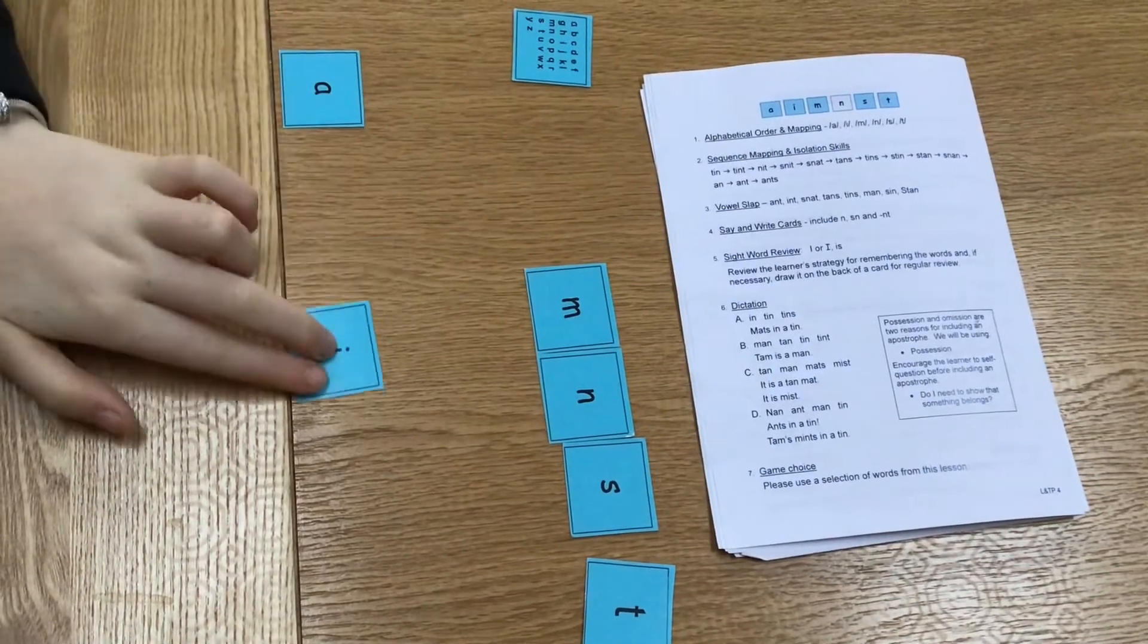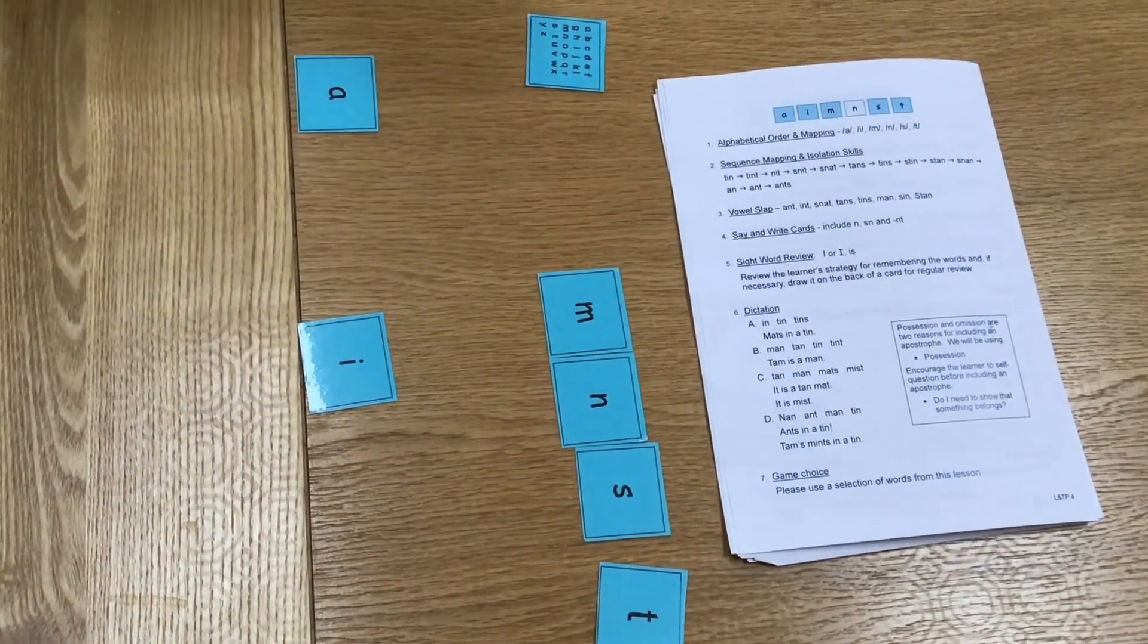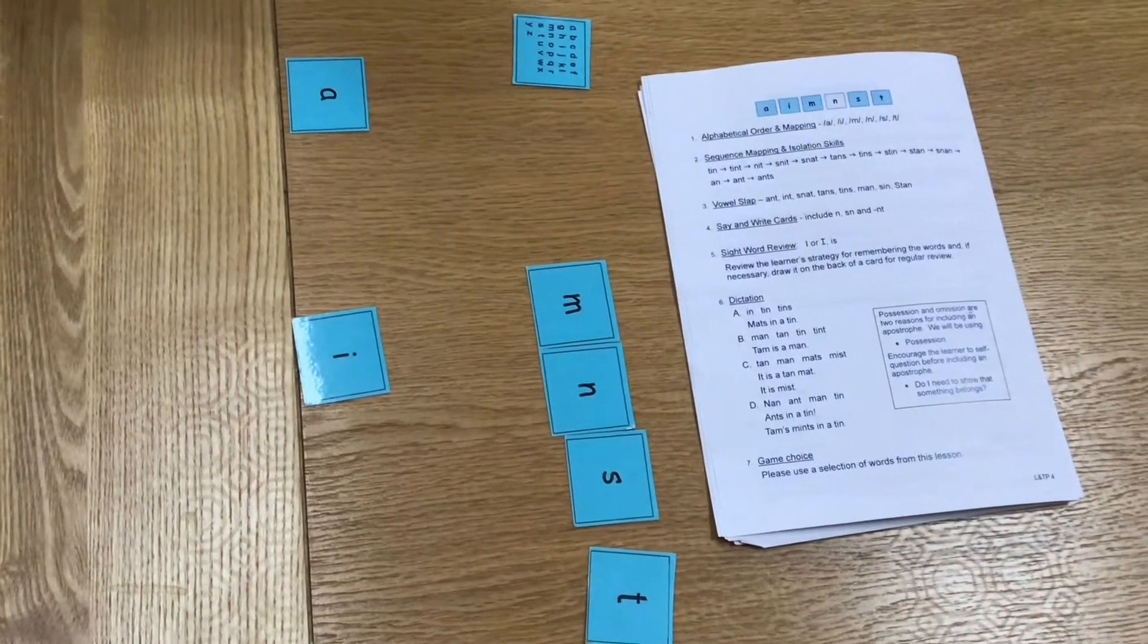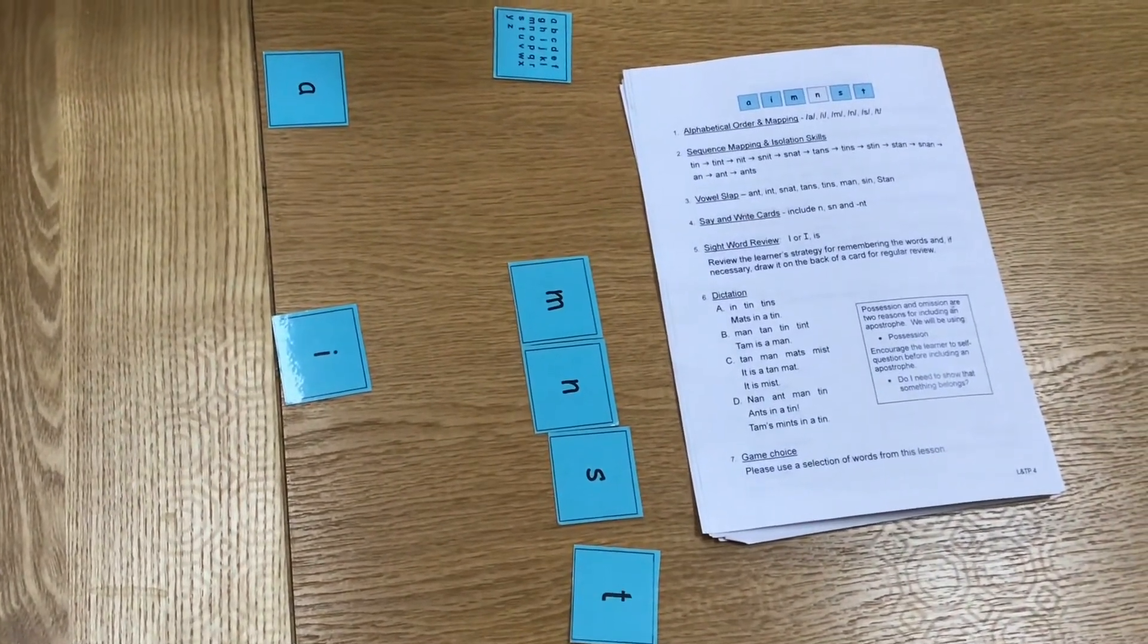Okay, now what have we got there? What sound do we say for the first one? Ah. That's the phoneme or the sound for the letter A.